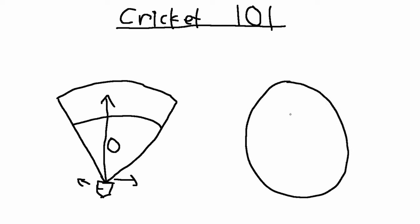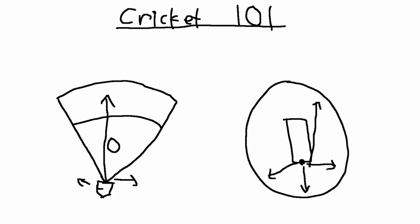Cricket is different in that the field is a circle. You have a pitch in the middle and you're standing there as the batsman. You can hit it in any direction you want — behind you, forwards, to the sides. There are no foul lines, so every single ball that you hit can be a live ball if you want it to be.